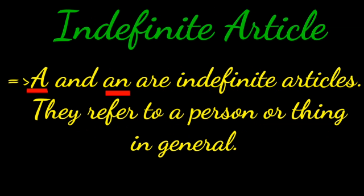Let's see the first one — indefinite article. What is an indefinite article? A and an are indefinite articles. They refer to a person or thing in general.